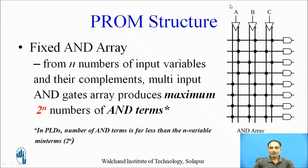Here you will see it is a 3-input function. A, B, C are connected through the inputs of these AND gates, and the connections are fixed. This black dot represents a fixed connection. For this particular 3-input system, you can have a maximum of 8 combinations as 2 raised to 3, meaning you can have a maximum of 8 AND terms — that is, minterms.